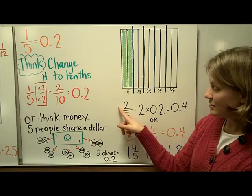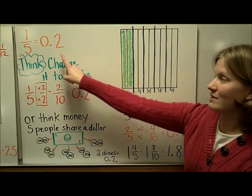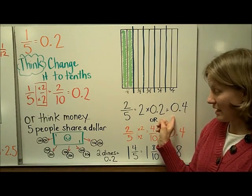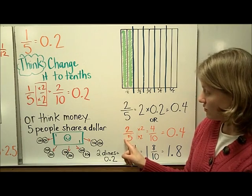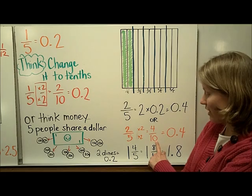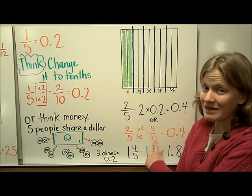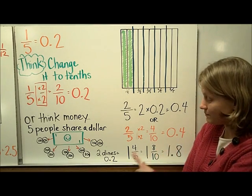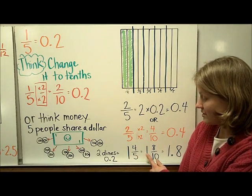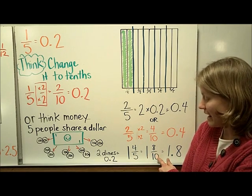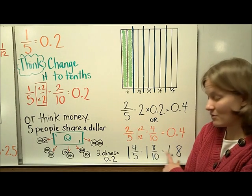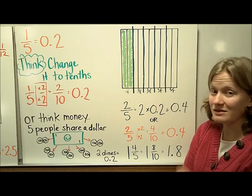So down here we can see 2 5ths would be 2 times the amount of 1 5th, 2 10ths, for a product of 4 10ths. But you can also change it into 10ths. 2 5ths multiplied by a 1 whole fraction gives you 4 10ths as an equivalent fraction. So 4 10ths the fraction we can easily write as 4 10ths the decimal. Here I change this one into 10ths as well. 1 and 4 5ths by multiplying by 2 halves is 1 and 8 10ths. Those are equivalent fractions. And 1 and 8 10ths the fraction you can write as 1 and 8 10ths the decimal.